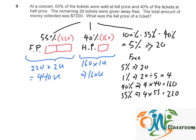So, the total number of units will be 440 plus 160 equals 600 units. So, 600 units equals 7,200 dollars.